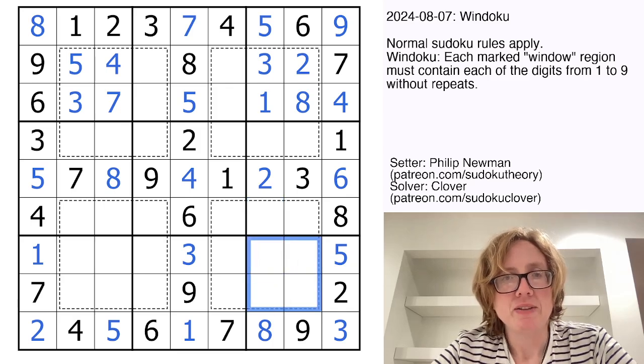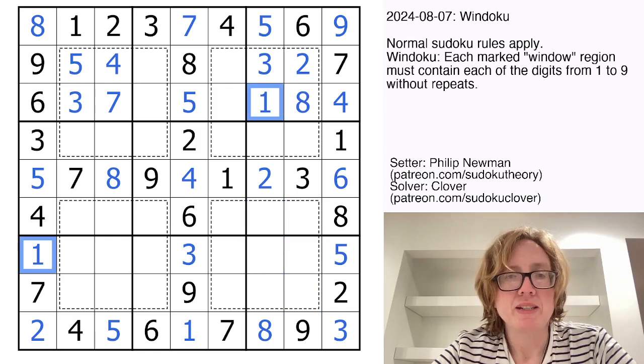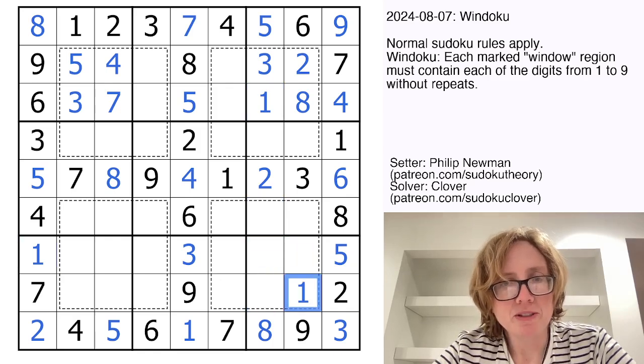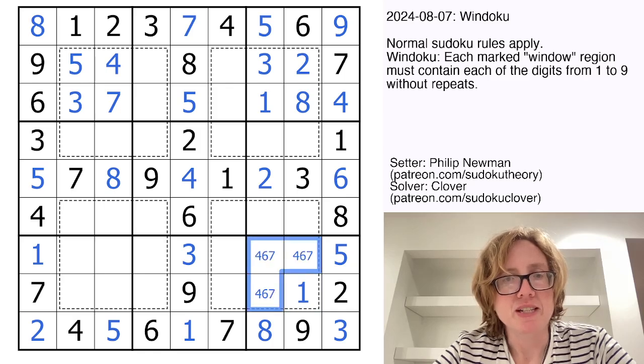Here I need one, four, six, and seven. I have two ones right here. That'll be my one. And I need to place four, six, and seven. And I can't quite do that yet.